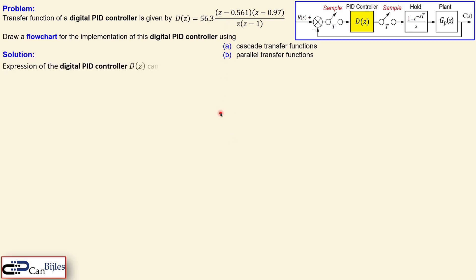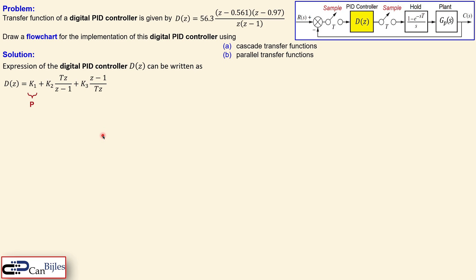Let's look at the solutions. We start with the expression of the PID controller in the digital domain, D(z), which can be written in the parallel configuration form: k1 plus k2 times Tz over (z minus 1), plus k3 times (z minus 1) over Tz, where T is the sampling period. You can see the P part, the integral part, and the derivative part clearly when you convert z to the s-domain.